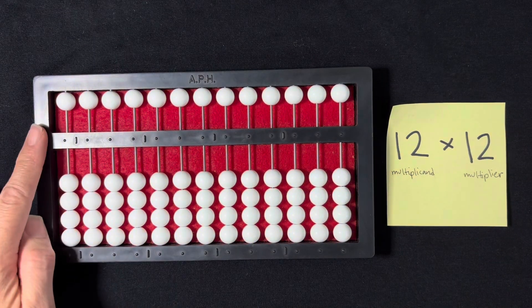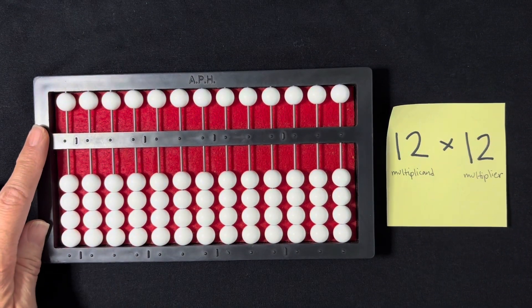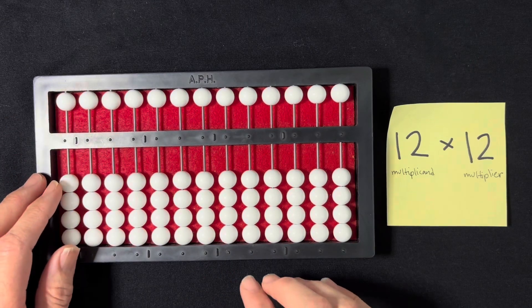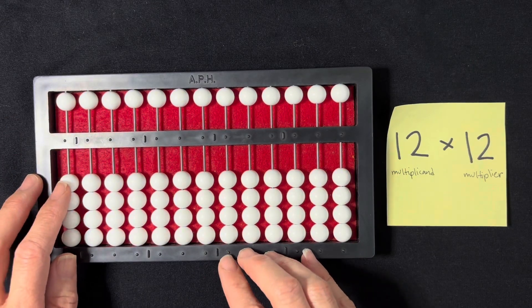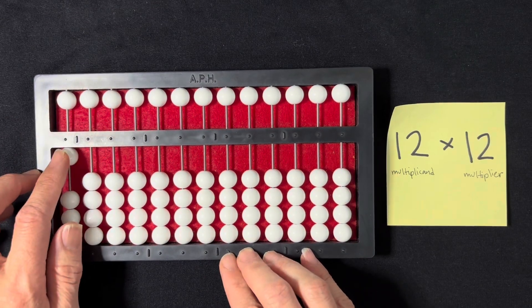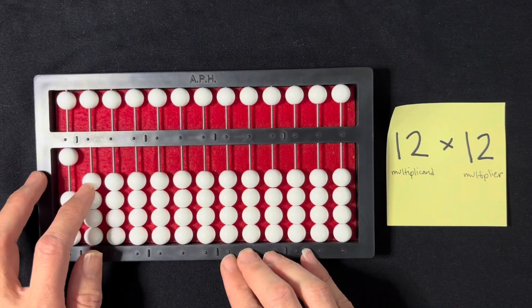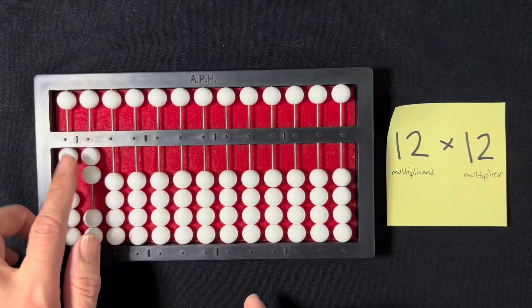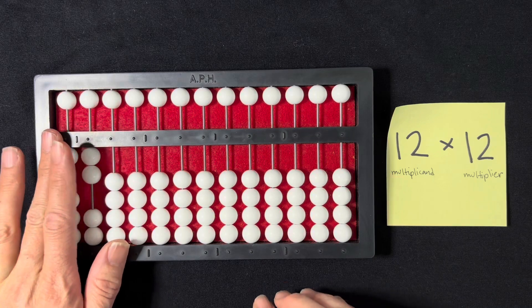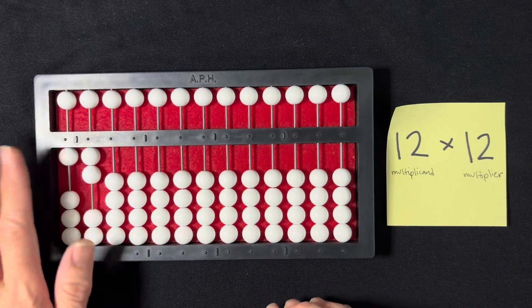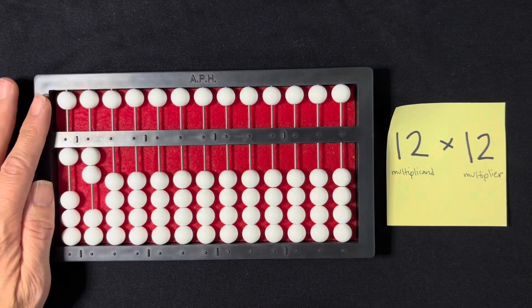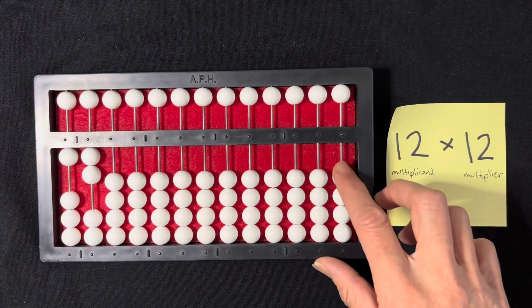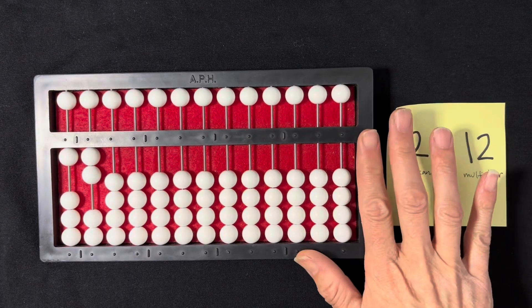When we use the counting method, we start on the far left-hand side and that's where we write our multiplicand. I'm going to write my multiplicand starting here — it's a 1 in the tens column and a 2 in the ones column. It's not set in any sort of place value; it's just set on the far left-hand side of the abacus.